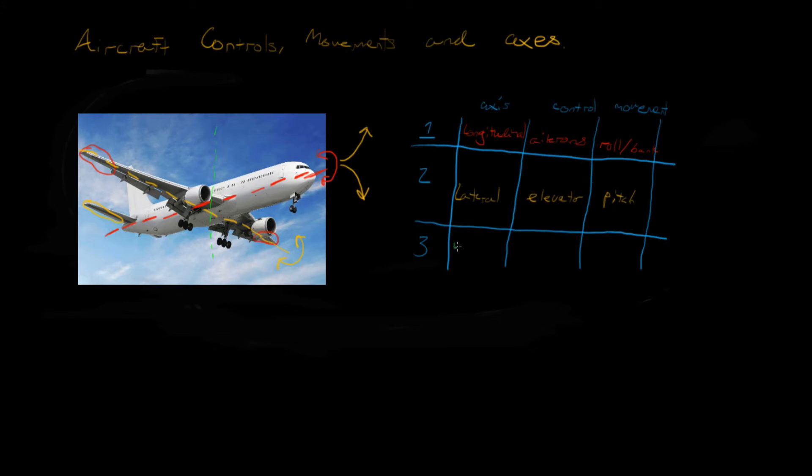So you have your vertical axis, or normal. And what control surface is going to cause movement around the normal axis? That's your rudder.